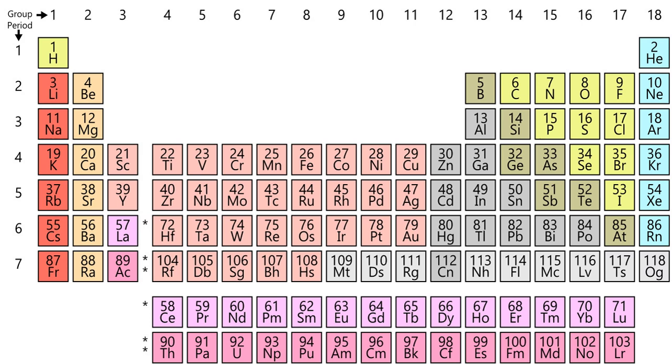Formation of elements with from 6 to 26 protons occurred and continues to occur in main-sequence stars via stellar nucleosynthesis. The high abundance of oxygen, silicon, and iron on Earth reflects their common production in such stars.